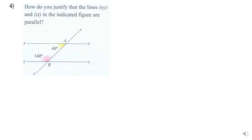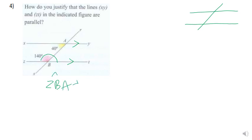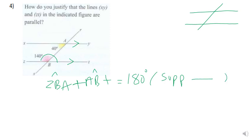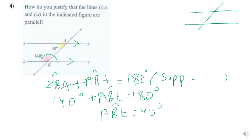In question number four, we need to justify that lines XY and ZT are parallel. Whenever you see two lines with an intersecting transversal, think of alternate interior angles. We know that angle ZBA plus angle ABT equals 180° (supplementary angles), so 140 + ABT = 180, giving ABT = 40°. Since we now have alternate interior angles both equal to 40°, the two lines are definitely parallel.